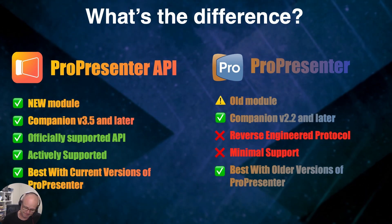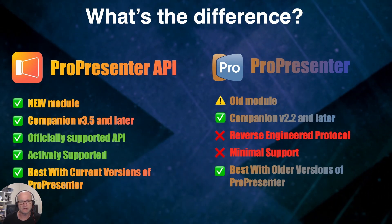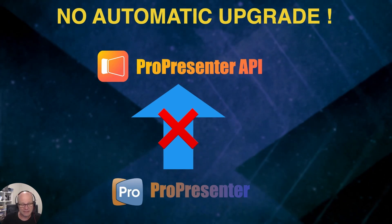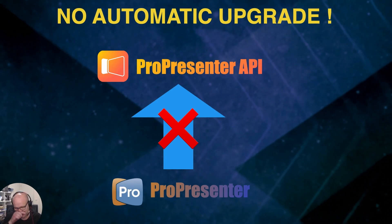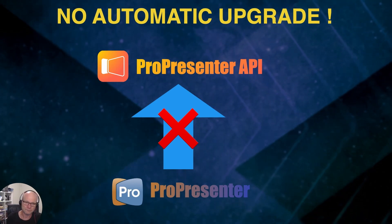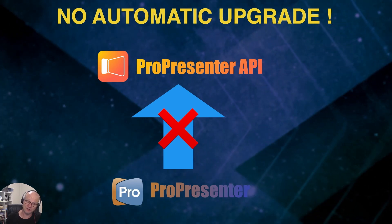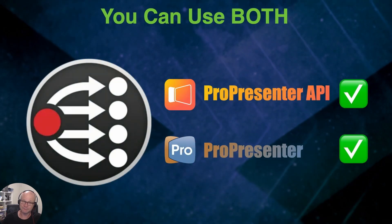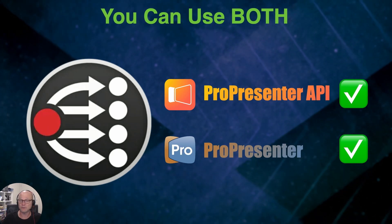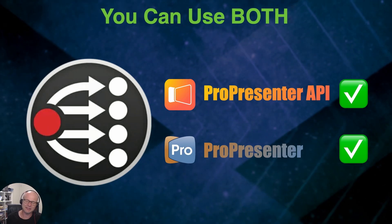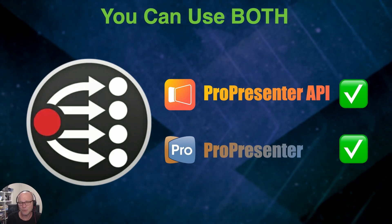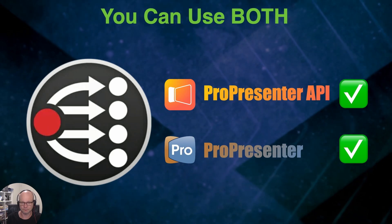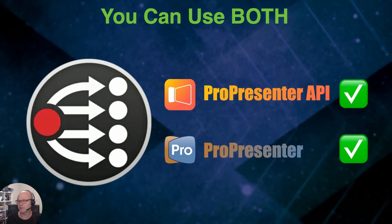If you're an existing user with a setup using the old module, I want to be very clear: this is a separate module, so there's no automatic upgrade path. The buttons, feedbacks, and actions you've built will not be automatically converted to the new module. But — and this is very good news — you don't have to upgrade. You can use both side by side. I've been doing this for months and months and it's perfectly fine. I cannot stress this enough: there is no technical reason why you need to upgrade. You can keep the old module with your current setup and run it as long as you like, alongside exploring the new module's features.